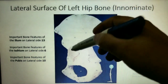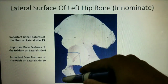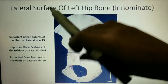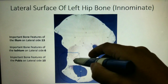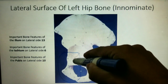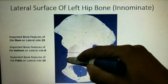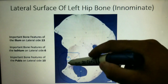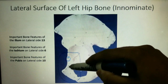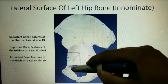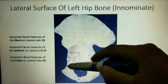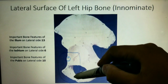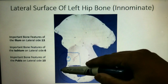Now we will study the bone features of the pubis. This part over here is the pubis. This round circle in between is the acetabulum, and this deep surface is known as the acetabular notch. Number 13 is the inferior ramus of pubis, and number 24 is the pubic tubercle.